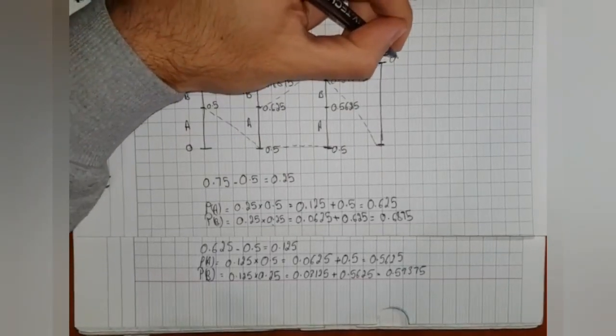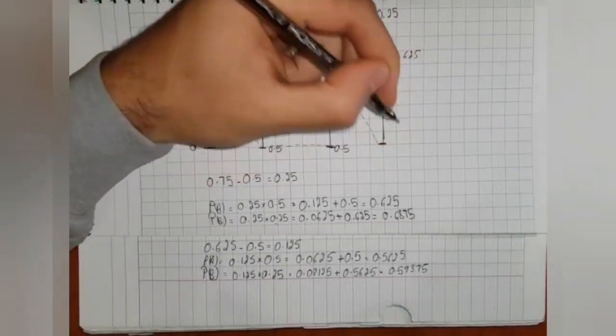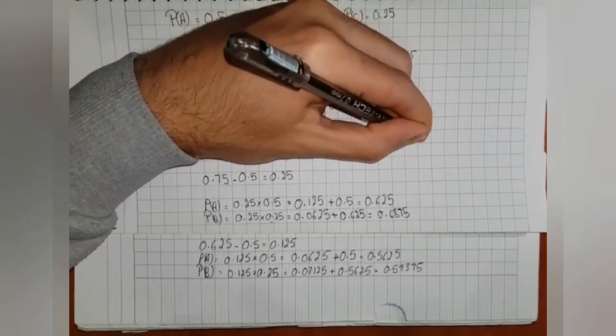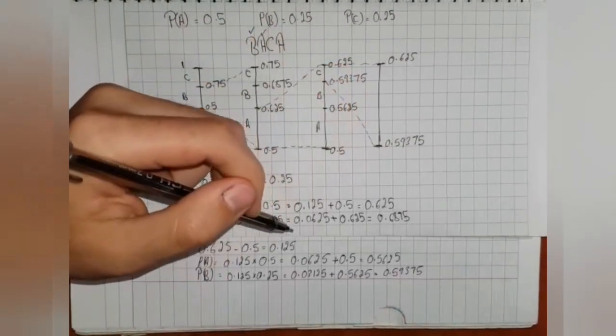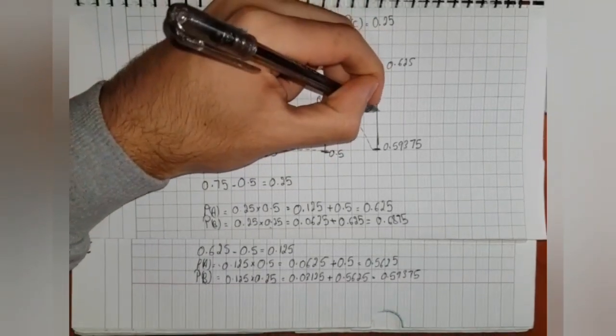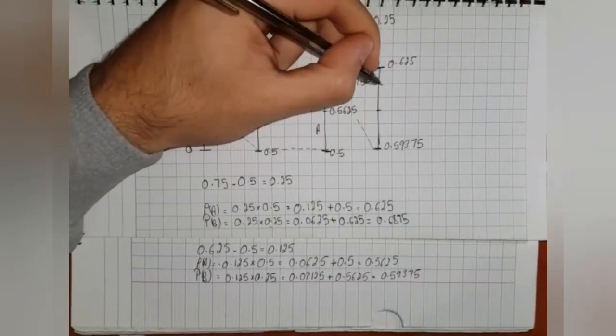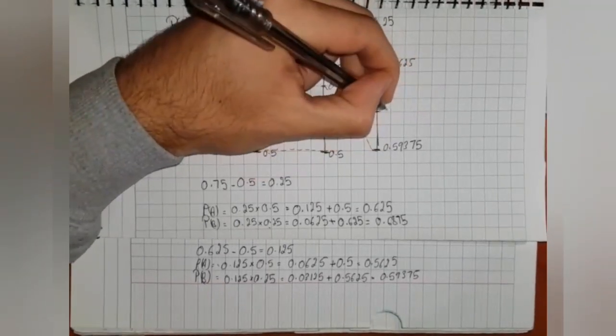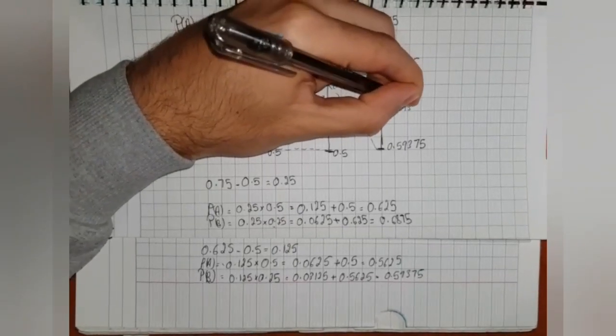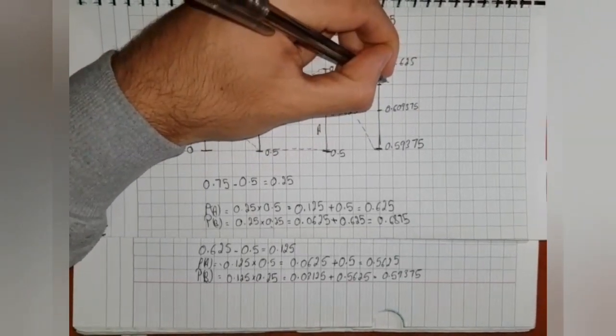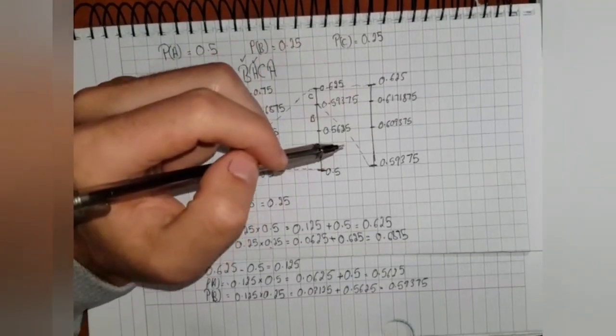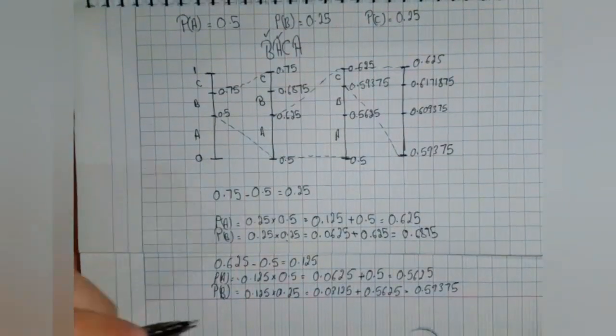Our upper limit will be 0.625, and the lower limit is 0.59375. I won't repeat the calculation because we already did it two times. A will be located here, B will be located here, and the numbers will be 0.609375. B will have, and our last interval will be 0.6171875.